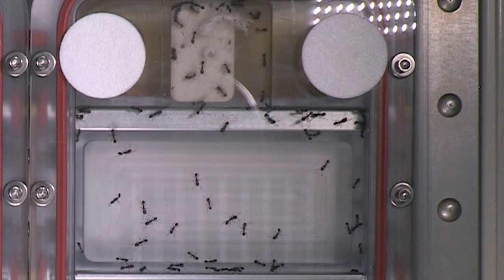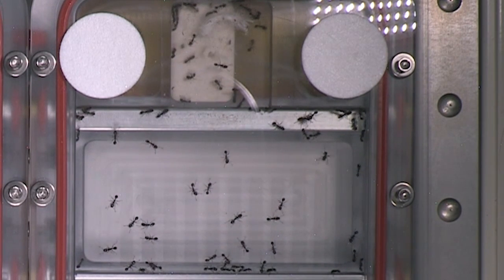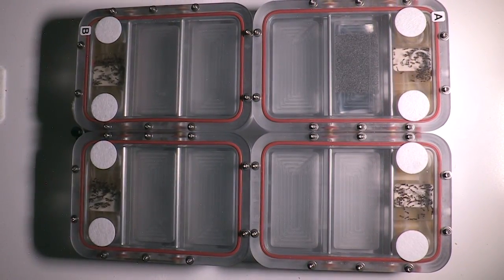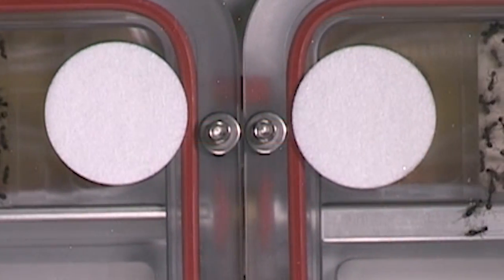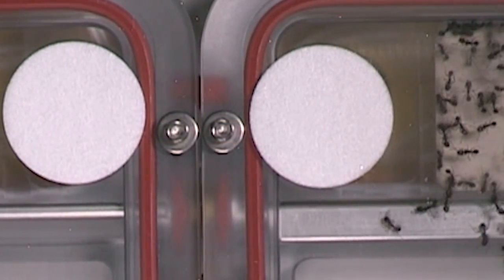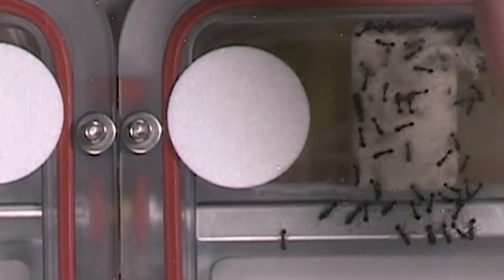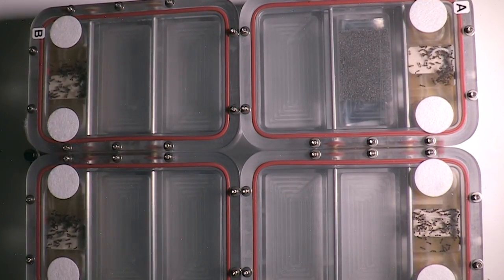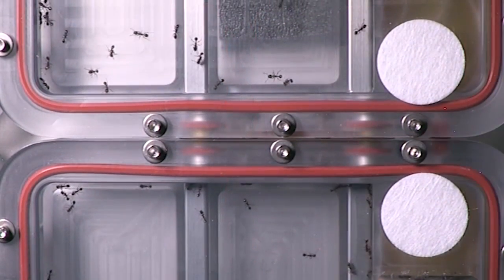And typically the area that an individual ant will forage in is somewhat dictated by how many ants are in that area, how big the area is. And so if there's more ants in the area and as they meet each other, they're going to continuously turn and their area of searching is going to be a little bit smaller. But if there's less ants or a larger area,